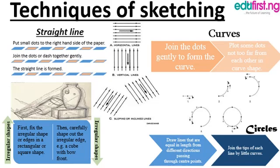Looking at curves: plot some dots not too far from each other in a curve shape. You can see the illustration below that shows how your dots should be close together. Then join the dots gently to form the curves. This is also applicable to the circle.